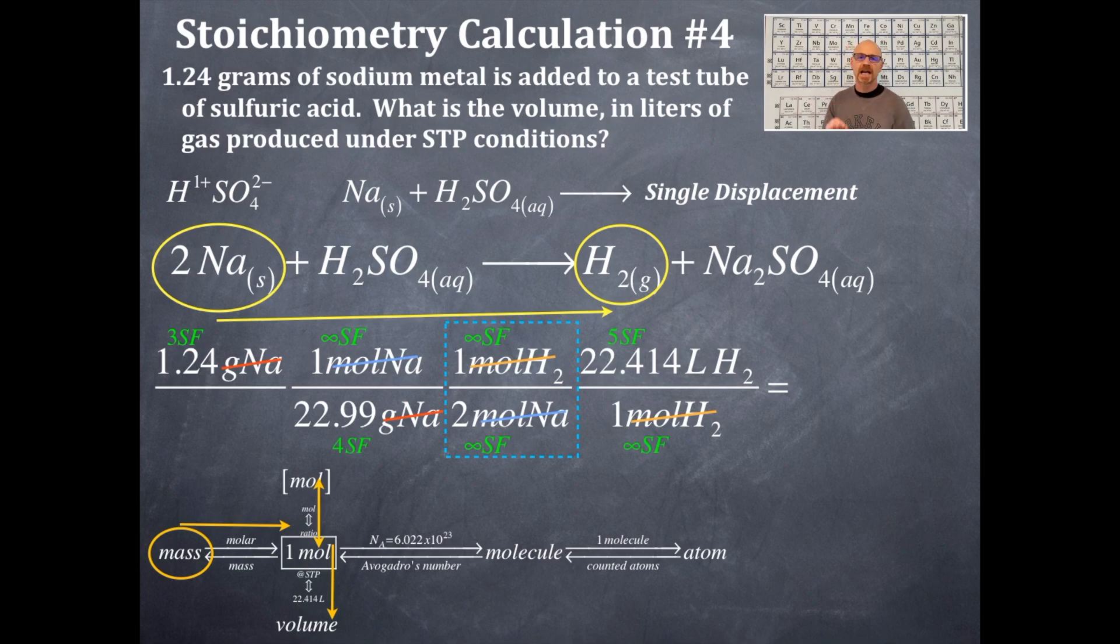So the fewest number of significant figures that we have on this problem is 3. So we're going to round our answer to 3 significant figures. But first we're going to do the math here. And this is the number that's coming out of your calculator. That's 0.60446.